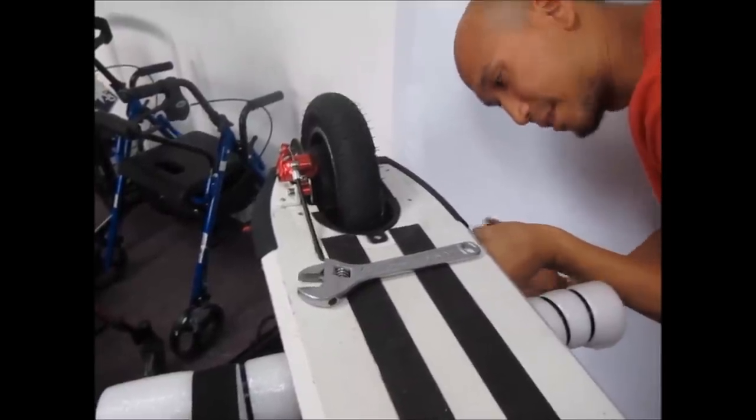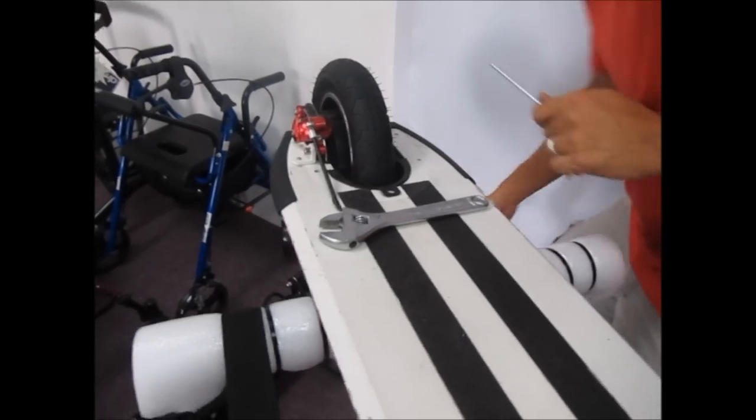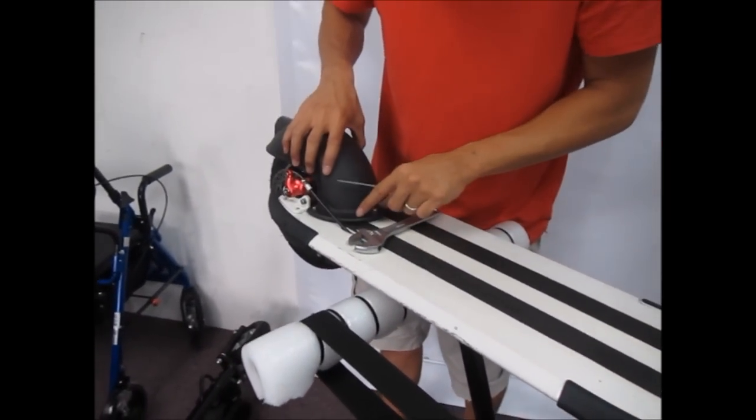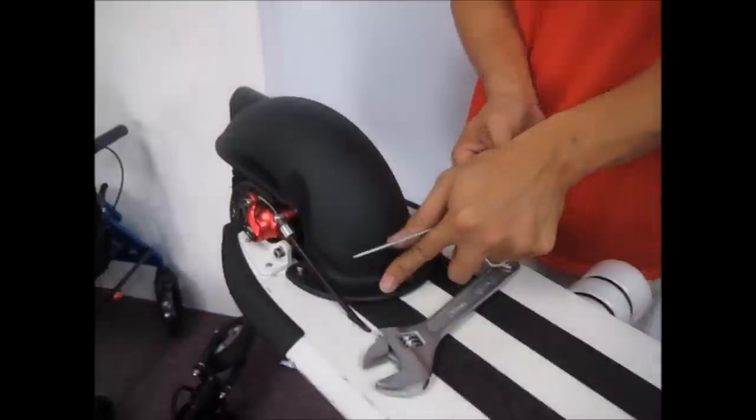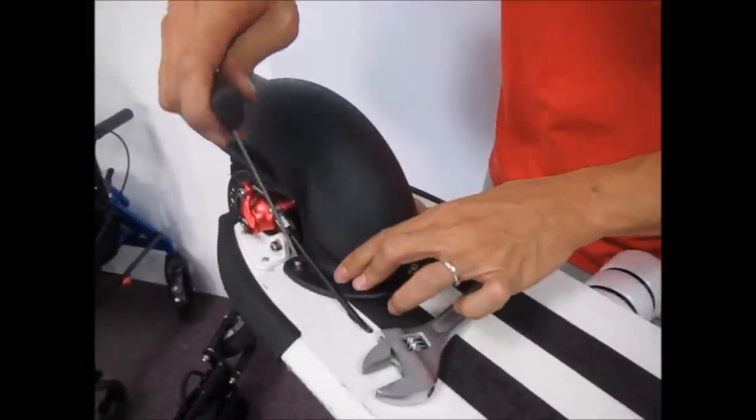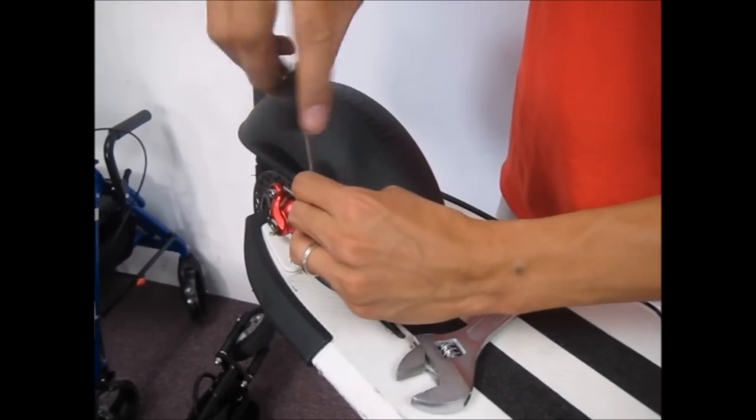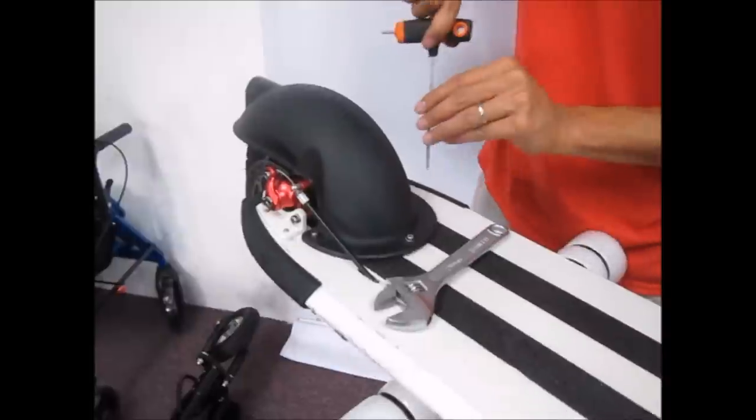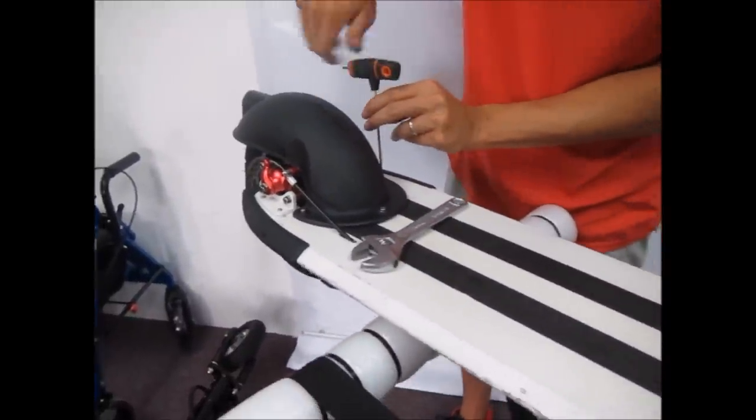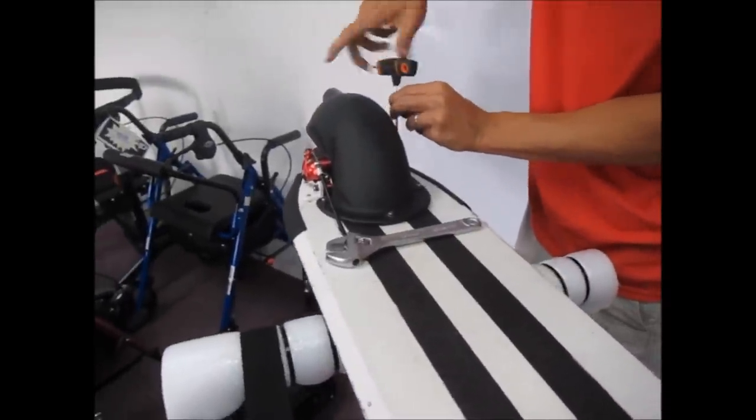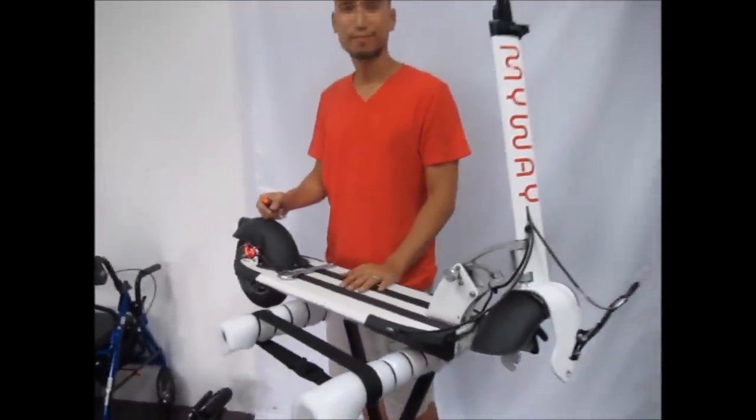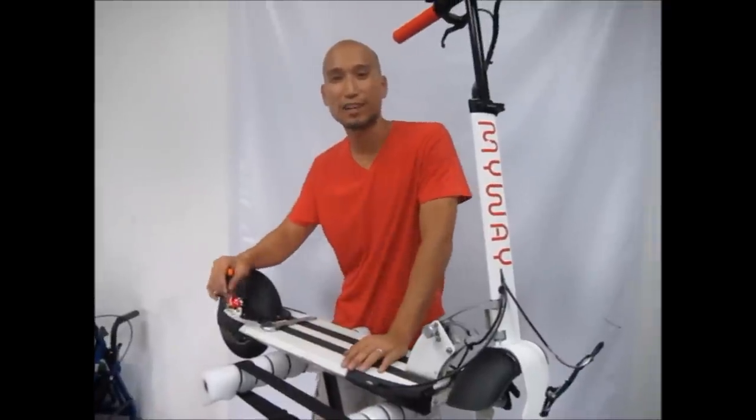Save for the mud guard. Take the mud guard. Tighten the four screws. And you're done. And that's how you change the MyWay tire.